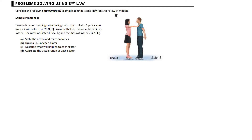We have a diagram already, so I can label some stuff in there. The mass here is equal to 55 and the mass here is equal to 78. There is a push. During the push, there are a few things we can do here. I think the diagram is enough to give us an idea.